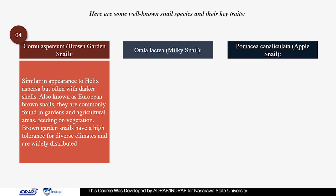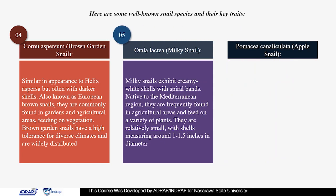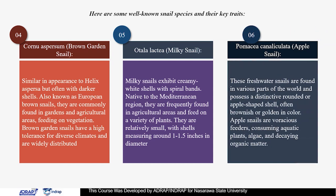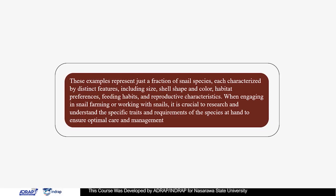Otala lactea, or milk snail: milk snails have a creamy white shell with sparse bands. Native to the Mediterranean region, they are frequently found in agricultural areas and feed on a variety of plants. They are relatively small, with shells measuring around 1 to 1.5 inches in diameter. Pomacea canaliculata, commonly called the apple snail: these freshwater snails are found in various parts of the world and possess a distinctive rounded or apple-shaped shell, often brownish or golden in color. Apple snails are voracious feeders, consuming aquatic plants, algae, and organic matter. These examples represent just a fraction of snail species, each characterized by distinct features including size, shell shape and color, habitat preferences, feeding habits, and reproductive characteristics.